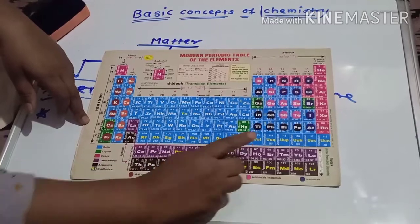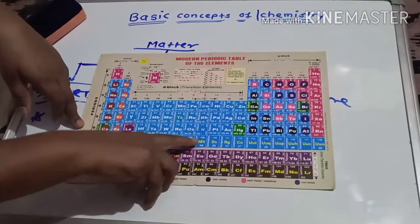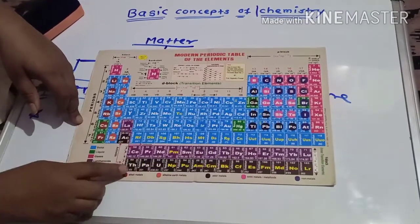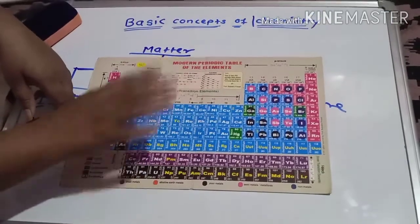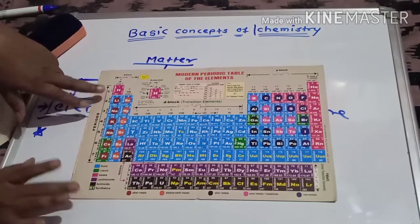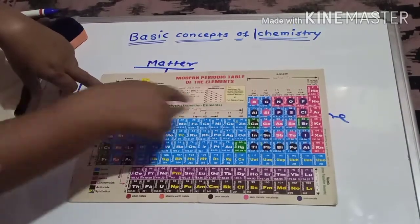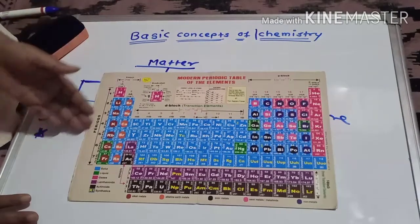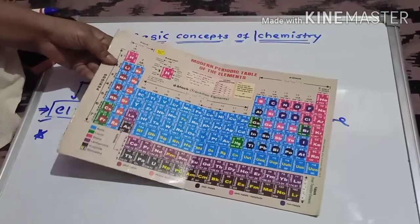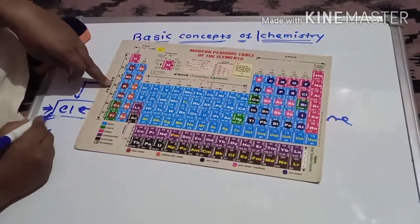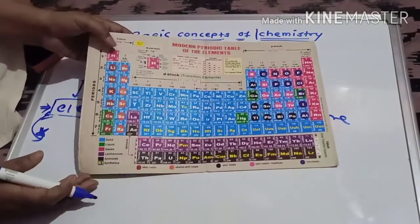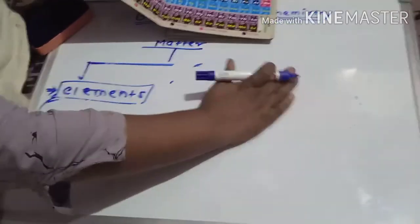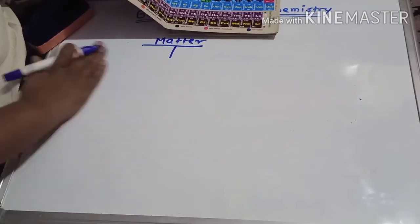In the periodic table, the manmade elements are highlighted with yellow color — these are synthetically prepared. For example, hydrogen is an element, sodium is an element, carbon is an element, boron is an element, nitrogen is an element, sulfur is an element — all these are elements. The second topic we are going to discuss is how elements are represented. We will discuss compounds in detail in the next lecture.